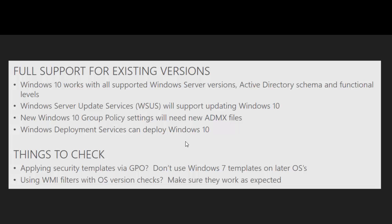For Windows 10 Group Policy settings, you will need to download new ADMX files — the Group Policy template files — with a link included on the OEM Australia team blog site. WDS is a fantastic way to deploy new operating systems or upgrade images. If you are applying security templates via Group Policy, don't use the Windows 7 templates; instead use WMI filters to check what version of the OS it is. If you're already working with Group Policy and multiple OS versions, you've probably already been doing some of this work — just make sure you test and the end results are exactly what you expect.